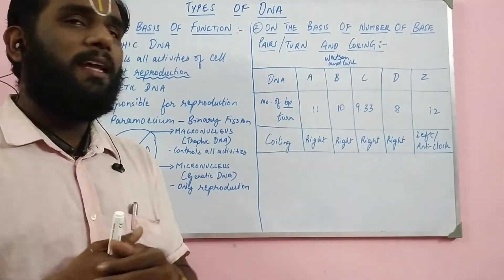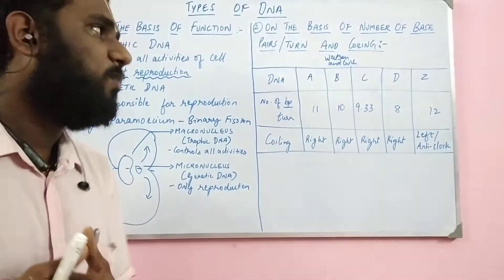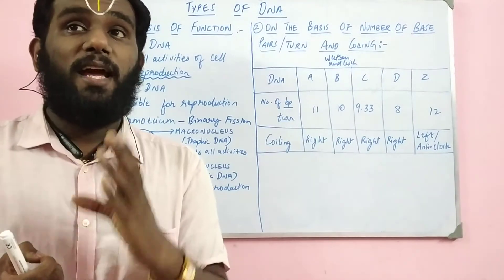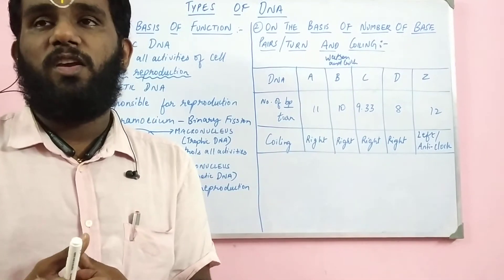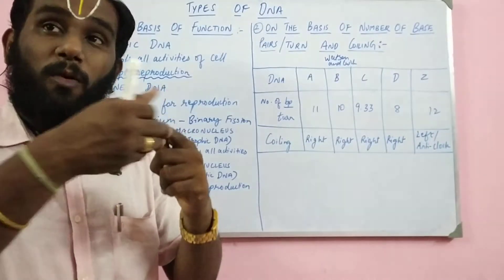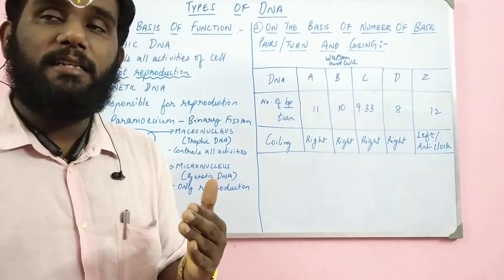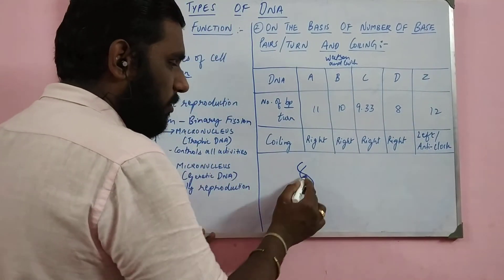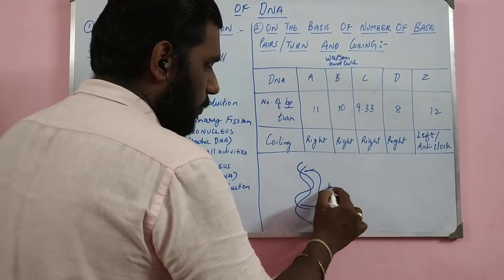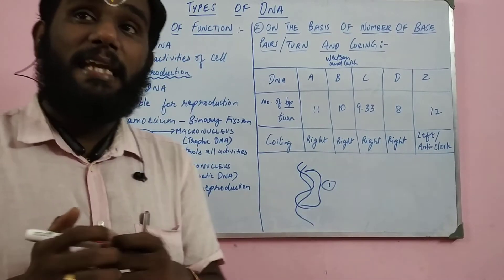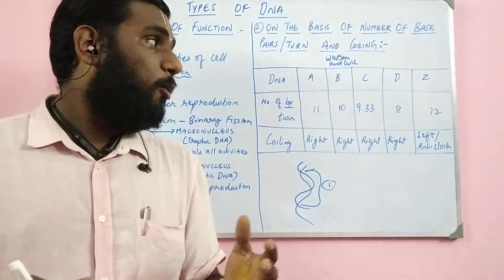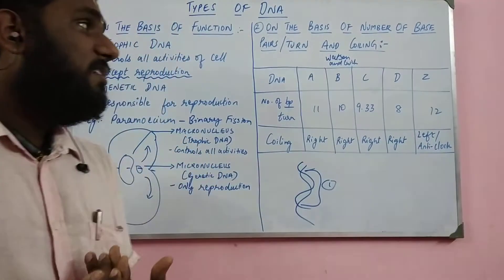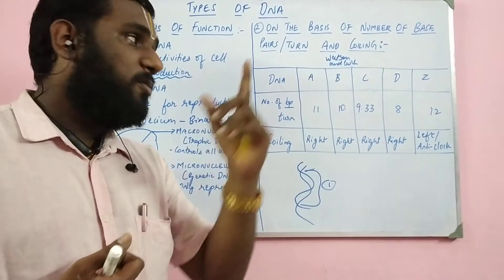C-DNA consists of 9.33 base pairs per turn. What this means is that if you consider 10 turns together, there will be a total of 9.33 multiplied by 10, which is 93 base pairs. So C-DNA contains 9.33 base pairs per one turn.